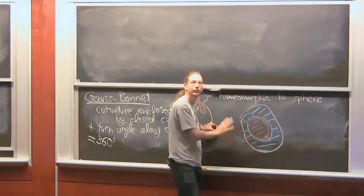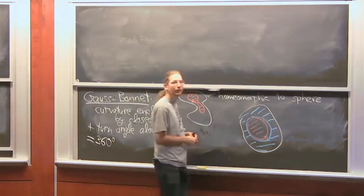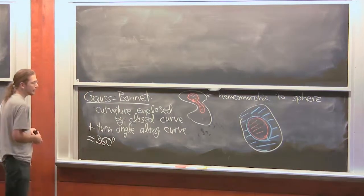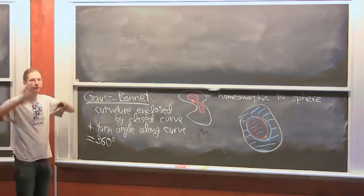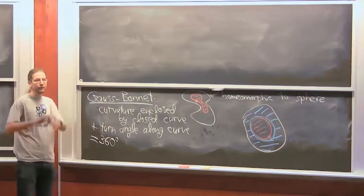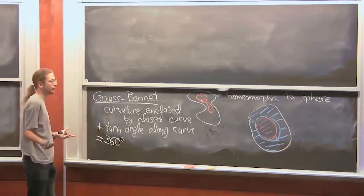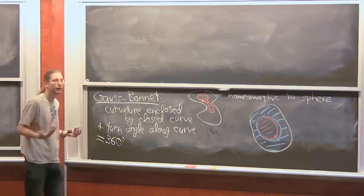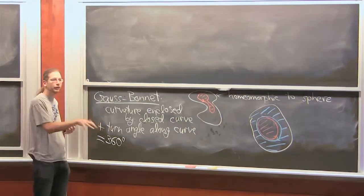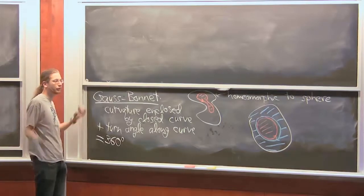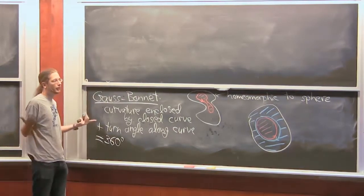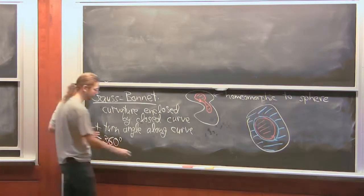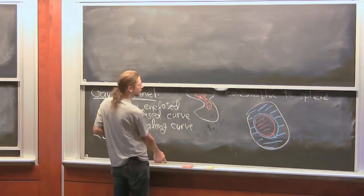You add up the total curvature everywhere and always get 720. For convex polyhedra, all curvatures are positive, so this 720 must be spread around. For non-convex things, you can have some negative curvature that balances positive curvature, so you can have a lot of both but with exactly 720 excess. We'll be using that fact in the future.